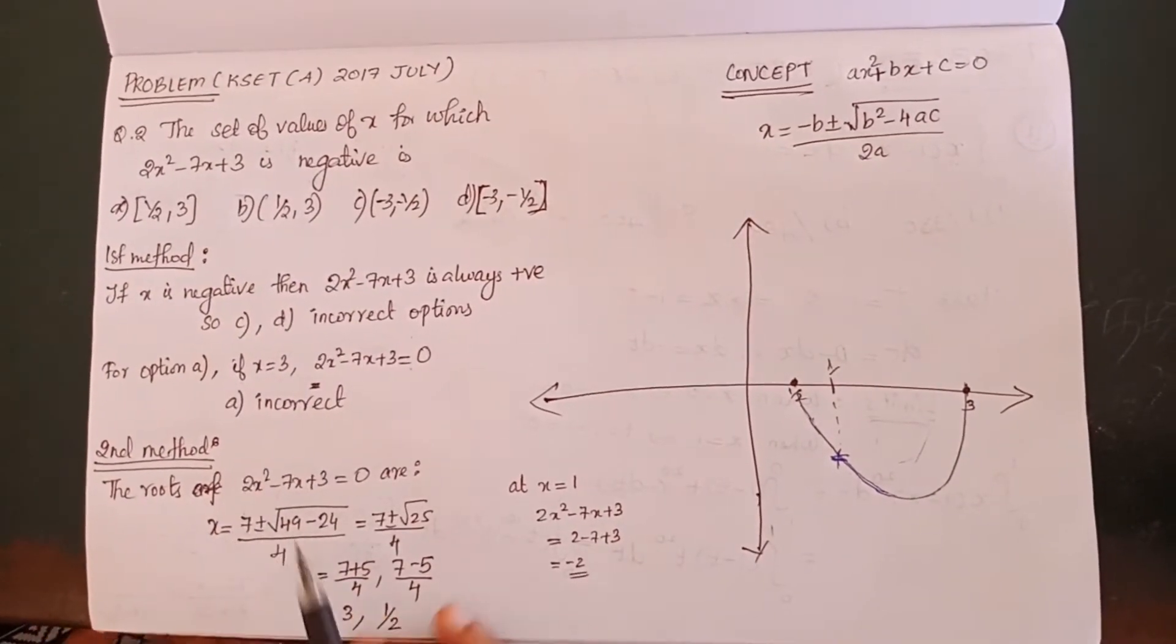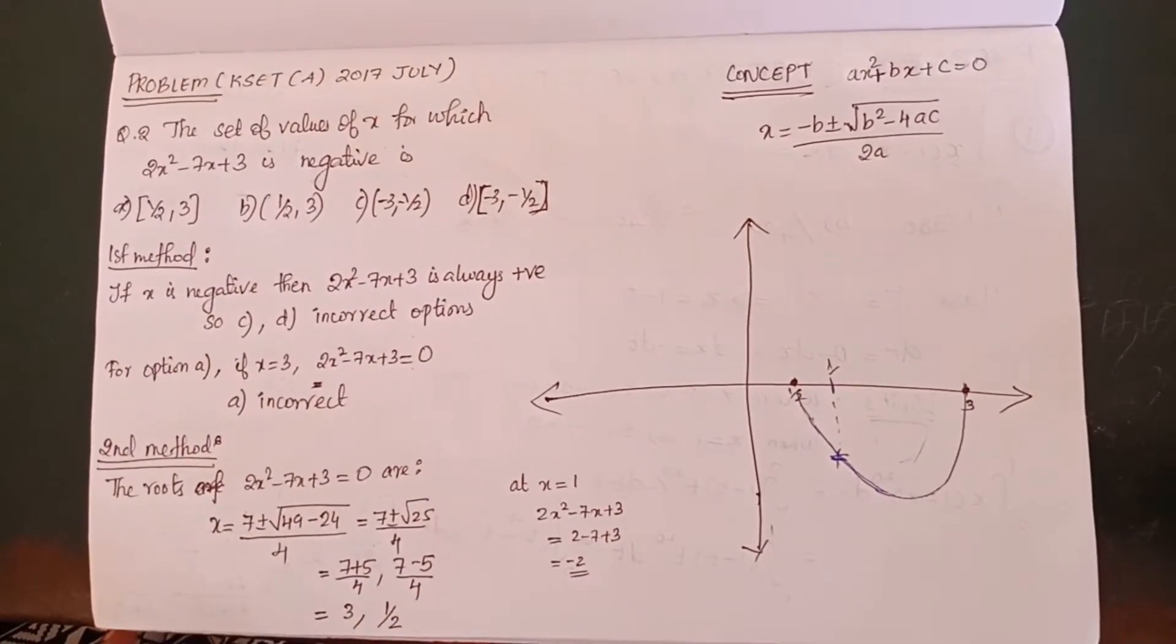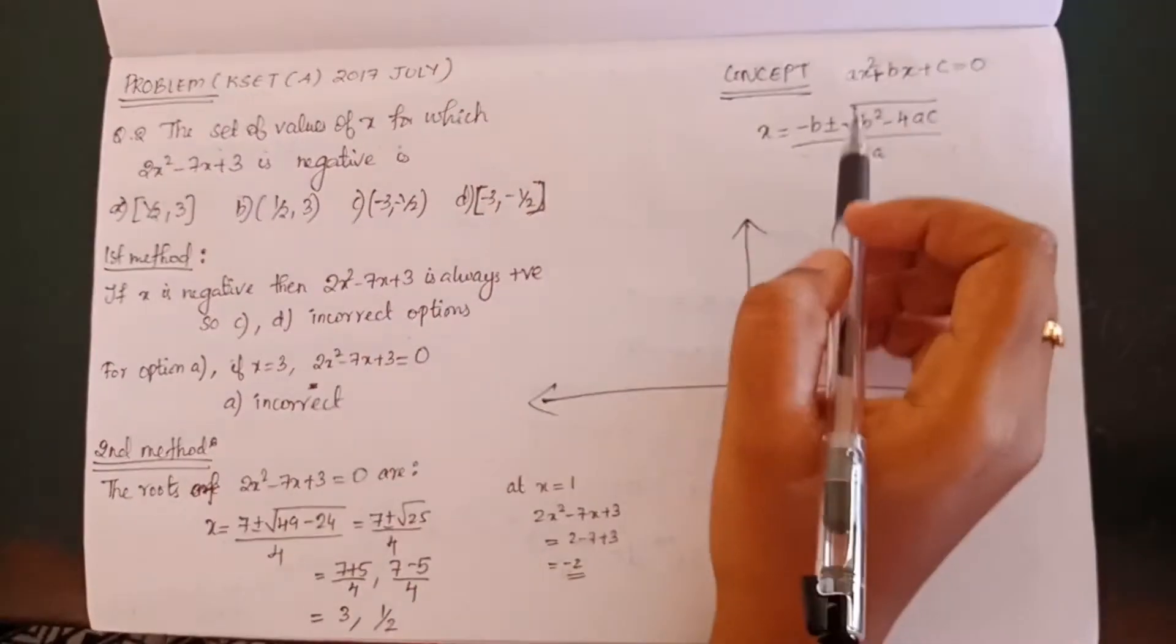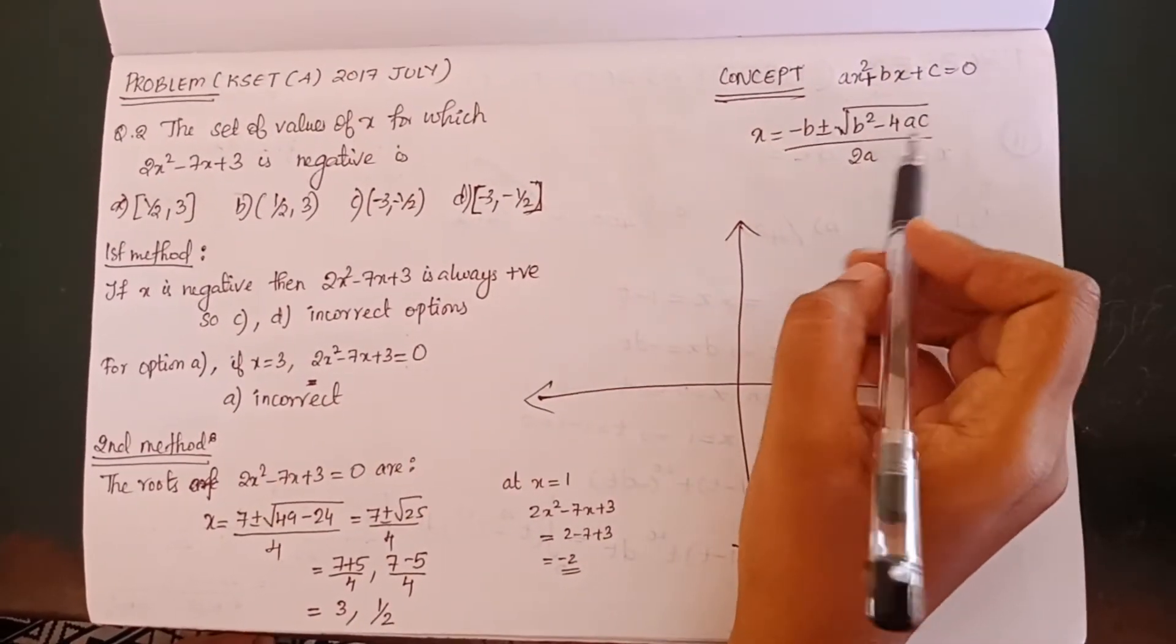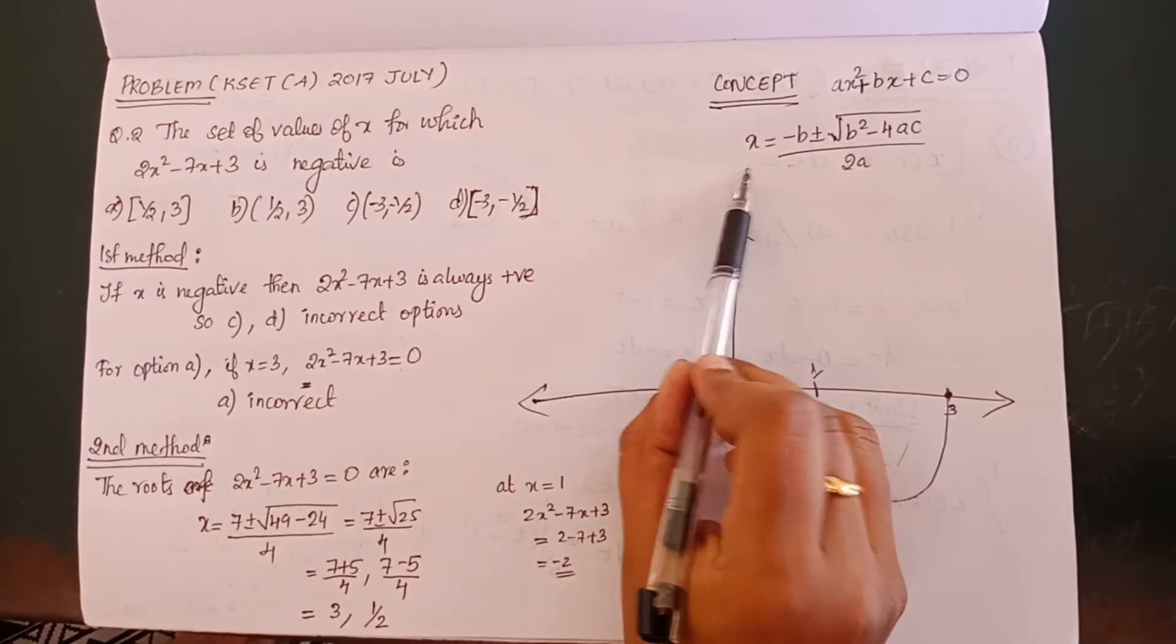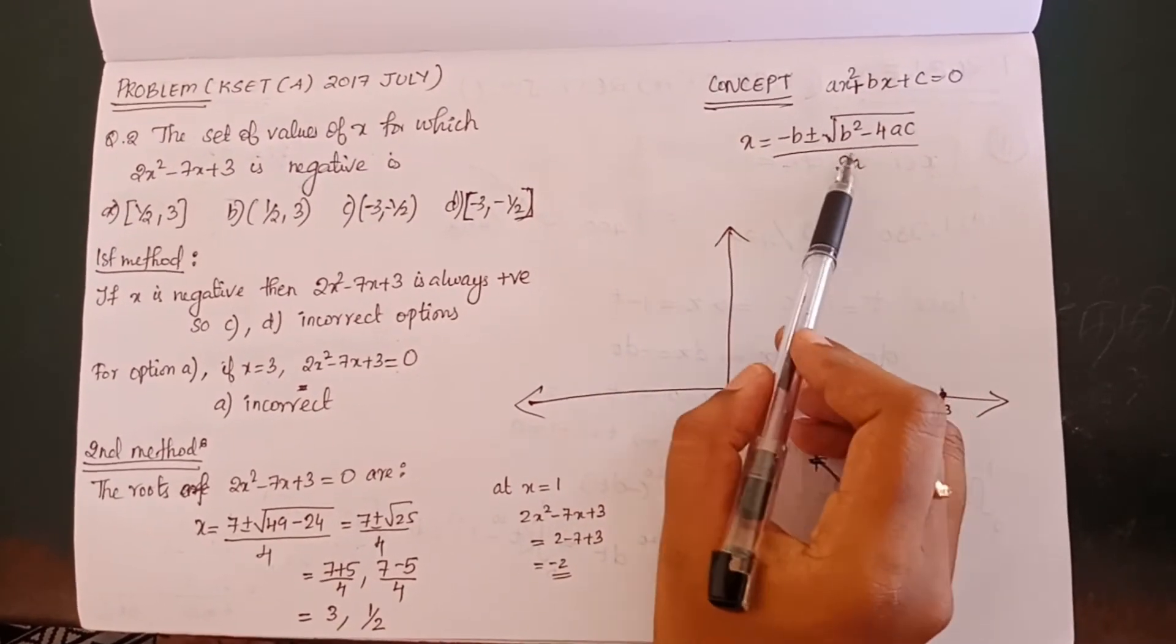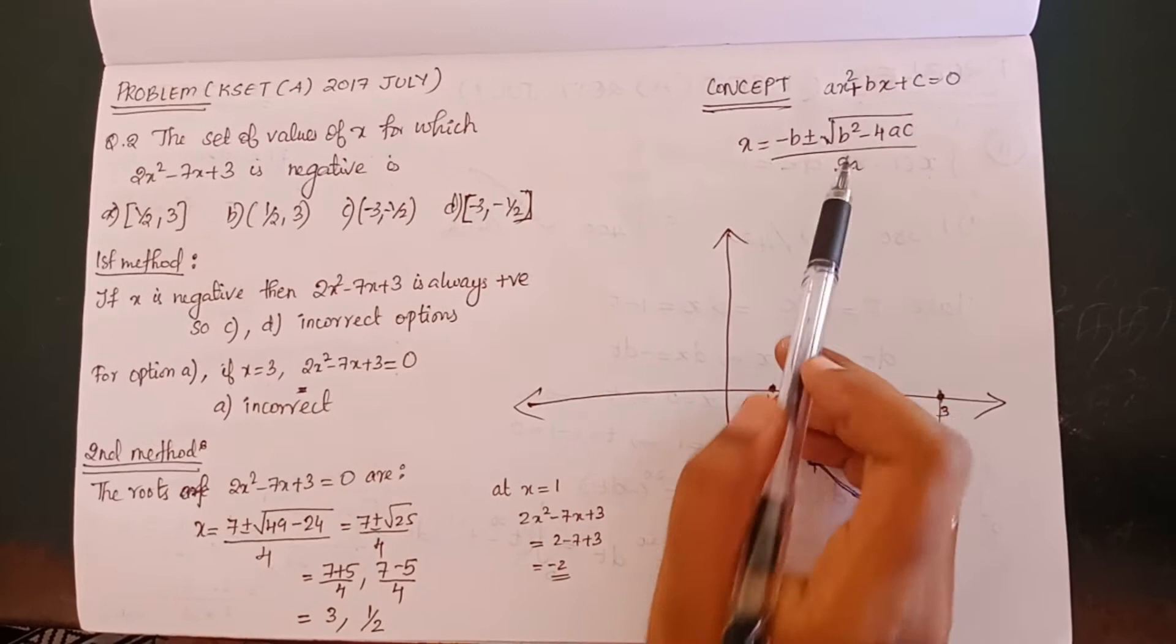In the second method, we will check the roots. For the equation, we have to find the roots using x equals minus b plus minus root of b squared minus 4ac, all over 2a.